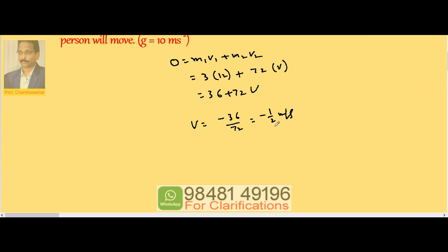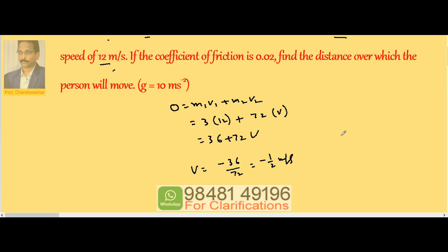That means the person moves backwards with a velocity half meter per second. Now, mu is given, so deceleration of the body on the rough surface is mu into g, 0.02 into g is 10, so it is 0.2 meter per second square.